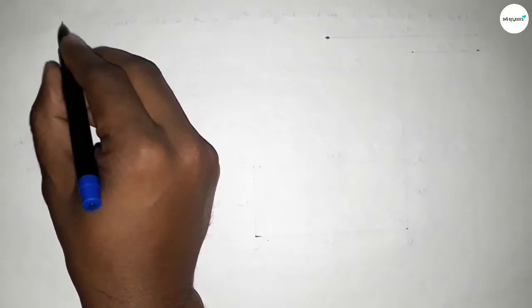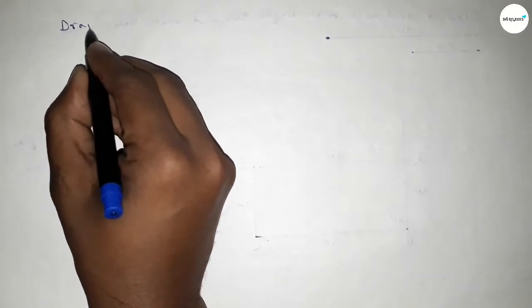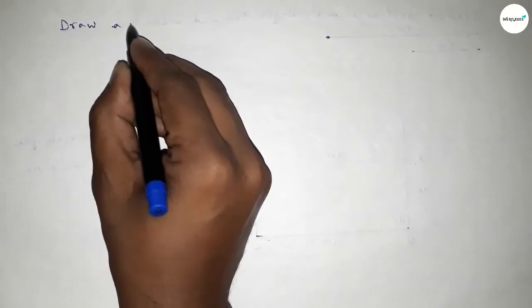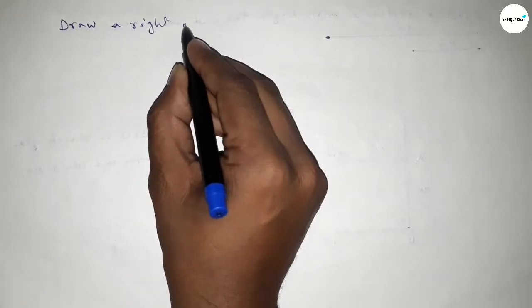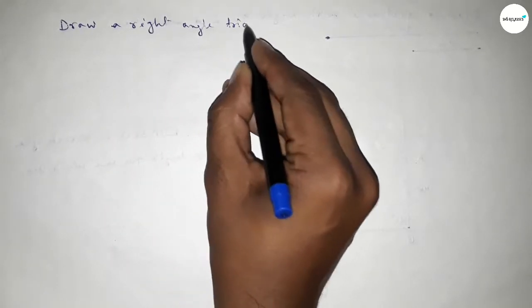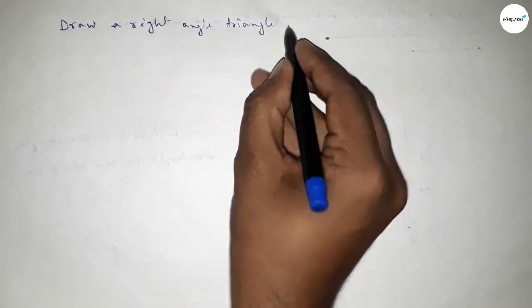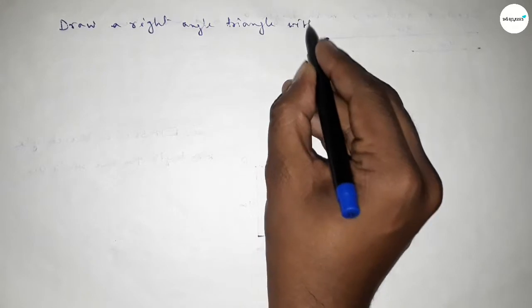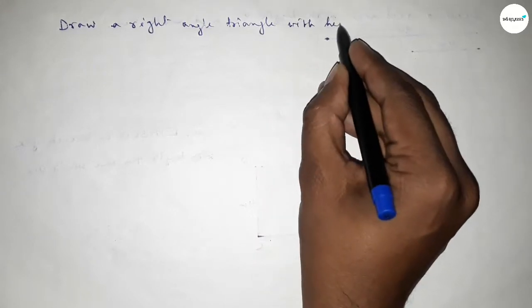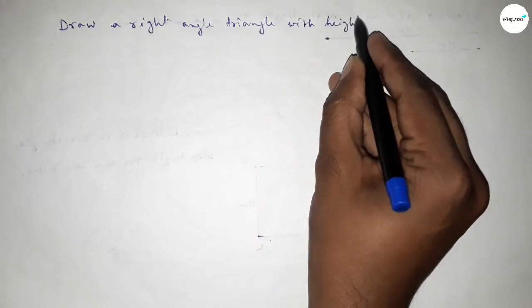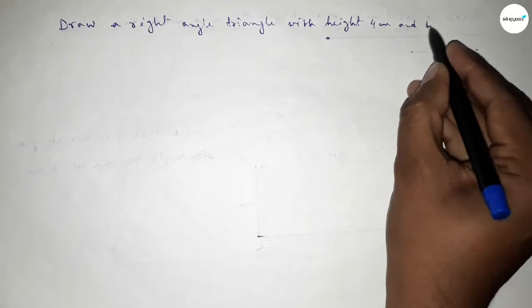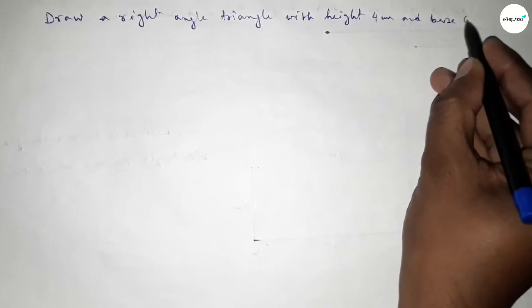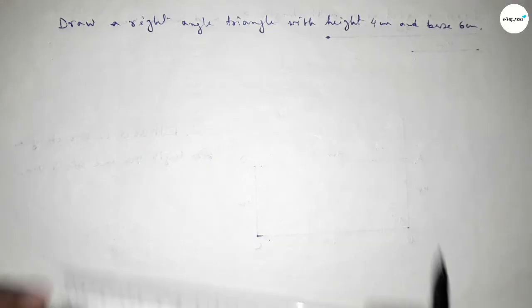Hi everyone, welcome to SI Share Classes. Today in this video we have to draw a right angle triangle with height equal to 4 centimeters and base equal to 6 centimeters. So let's start the video.